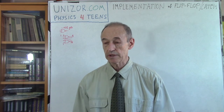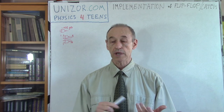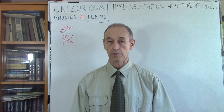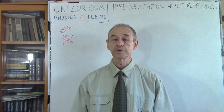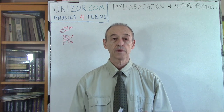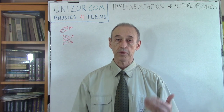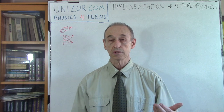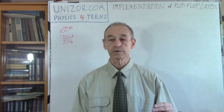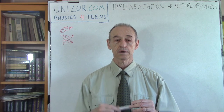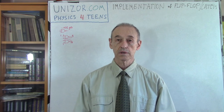First of all, I would like to remind you what we have learned in the previous lectures. We have learned about how diodes work, how triodes work, and how using diodes and triodes we can implement logical operations on signals. Now the signals we differentiate as ones and zeros. One means some positive potential on the terminal and zero means zero potential — basically it's grounded or somehow connected to the ground. So we have zero and one, zero and positive potential.